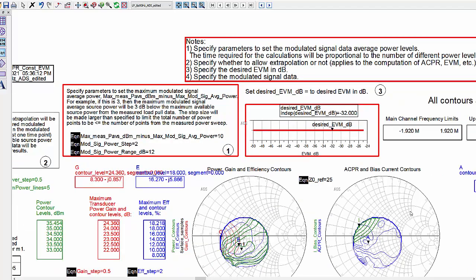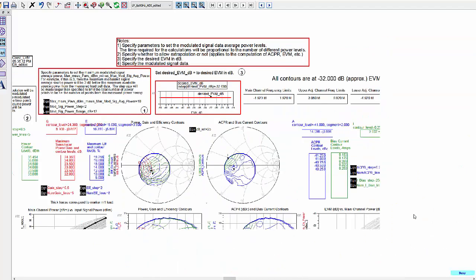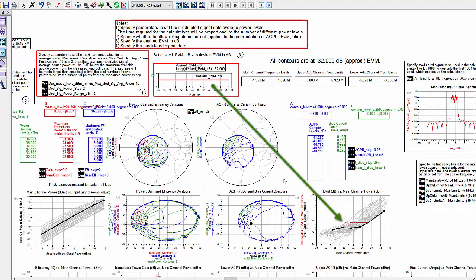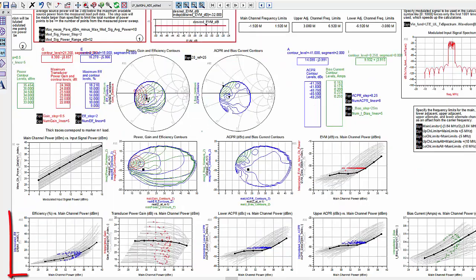The desired EVM dB marker sets the desired EVM. The EVM versus main channel power data is interpolated at this value, resulting in the data at the red dots. The corresponding efficiency transducer power gain, ACPRs, and bias current are shown.